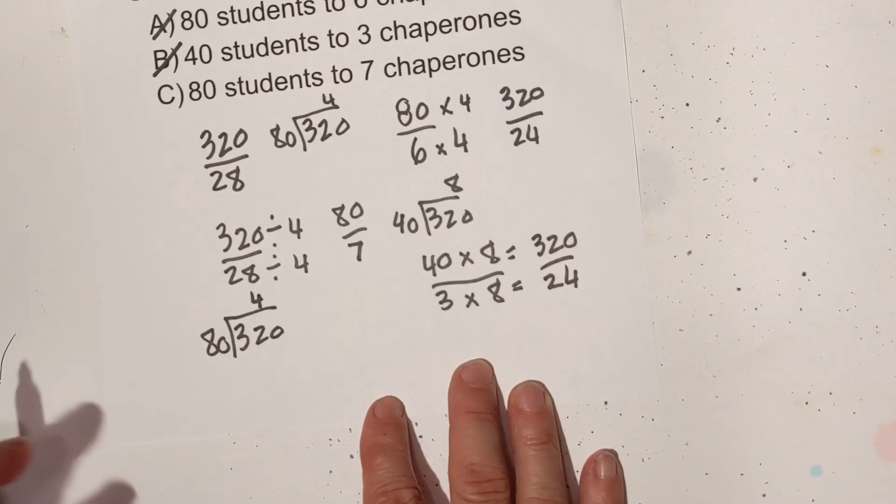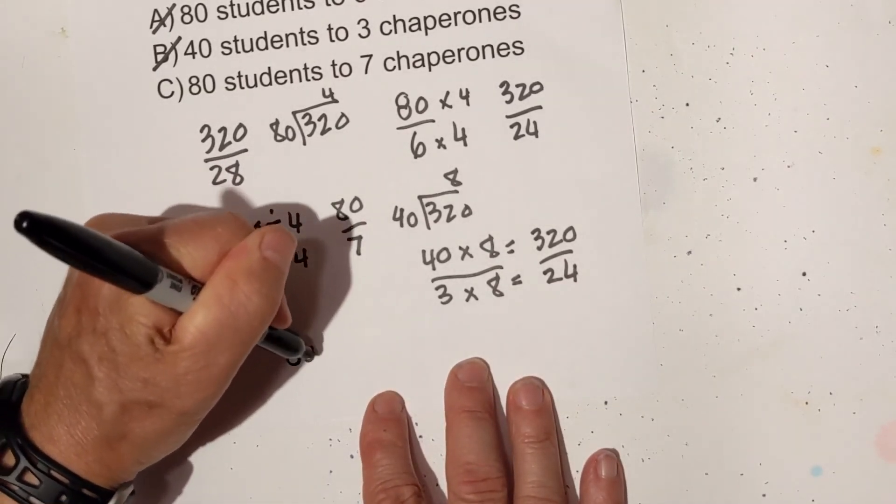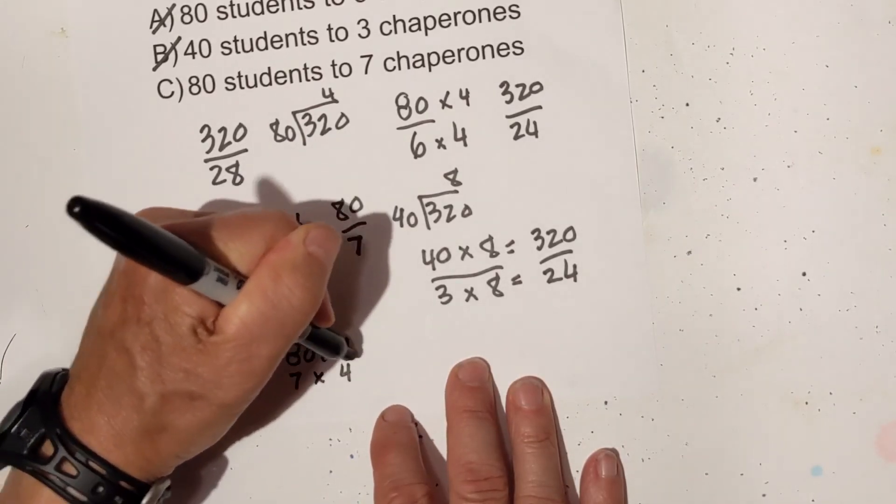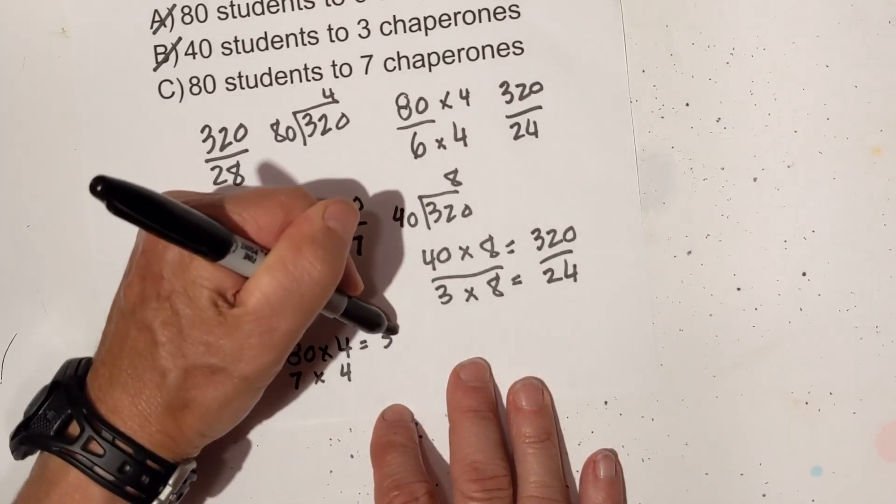And now let's move on to our last one. We have again 320 divided by 80. We know that that's 4. So I'm going to take 80 times 4 and 7 times 4 and both of those equal 320 over 28. And so yes that is indeed the correct equivalent ratio.